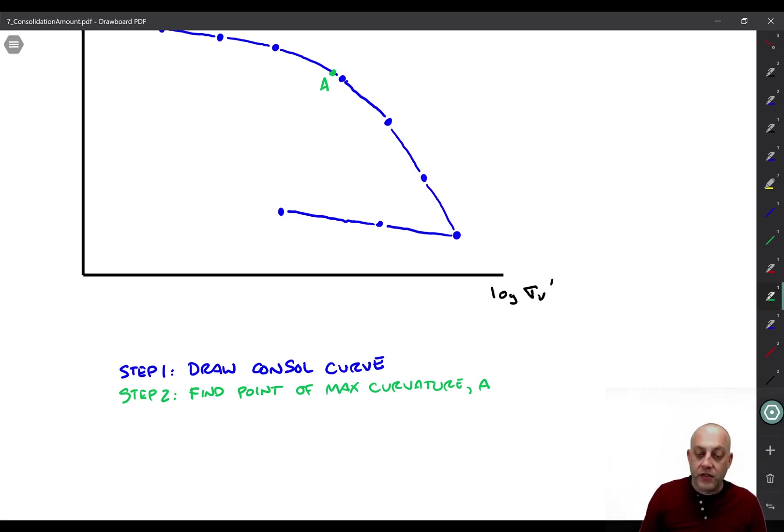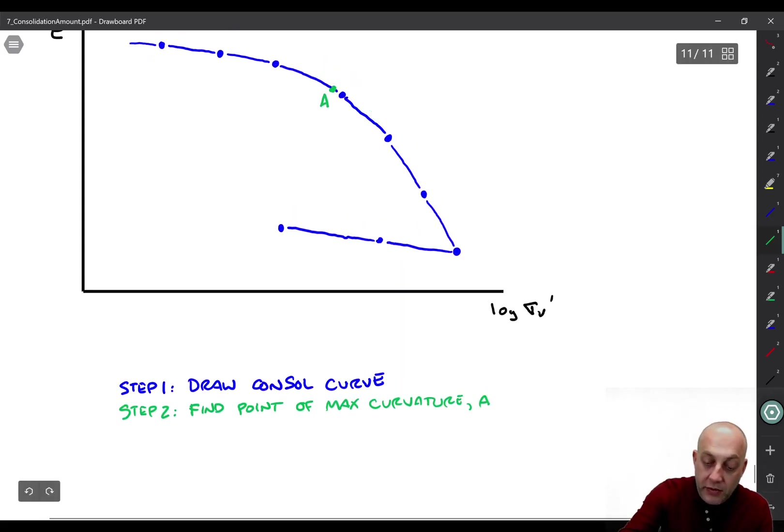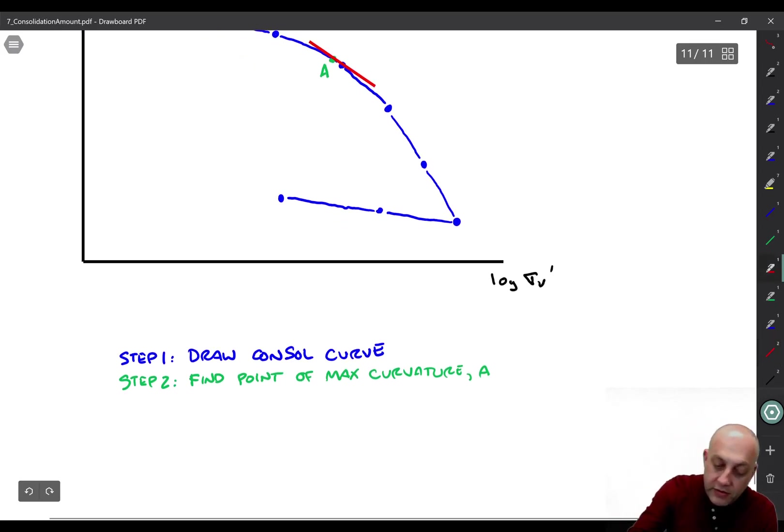Alright, so then what we do is draw a tangent to the consolidation curve at point A. So I'm going to make that green also. I'll come in here and just draw a line that is tangent to point A. Or you know what, maybe I'll make it red. I'm going to try and keep it so that the sequence is all different colors. So that was not perfectly tangent. It started a little higher. Maybe more like right there. Okay, so then the red line. Step one, step three, draw a tangent through point A.